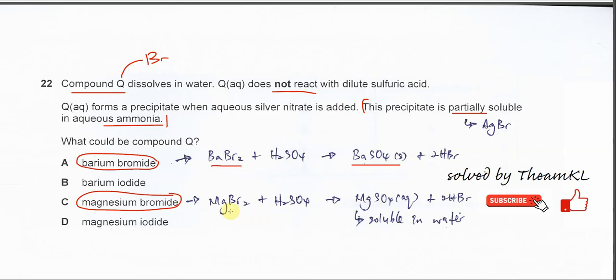And if let's say the compound is the magnesium bromide, magnesium bromide in the H2SO4, it will not really form precipitate like the barium sulfate. Because solubility of magnesium sulfate is high. So it's soluble in water. So no precipitation. Therefore the Q does not react with this sulfate acid because there is no precipitation. So we are quite sure answer is C.